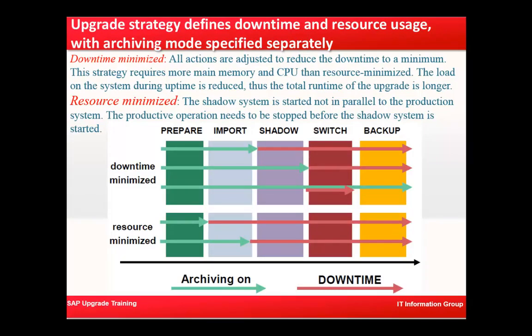The downtime minimized and resource minimized upgrade strategies define downtime and resource usage, with archiving mode specified separately. During the downtime minimized phase, all actions are adjusted to reduce downtime to a minimum, requiring more memory and CPU than resource minimized. In the resource minimized phase, the shadow system is not started in parallel — production operations must be stopped before the shadow system is started.